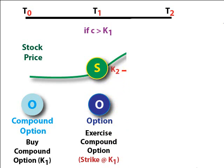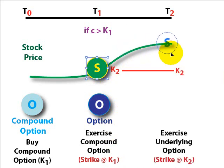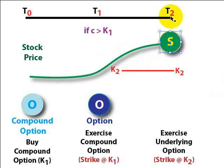So now we own the call option. And if we go forward in time, and let's just say the stock moves in our favor, it increases, such that at T2 there is intrinsic value in this call option. And the stock price is greater than K2.